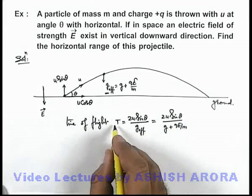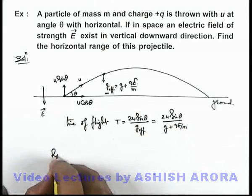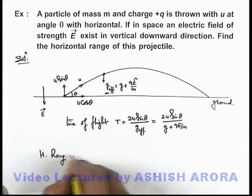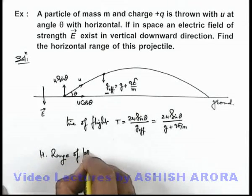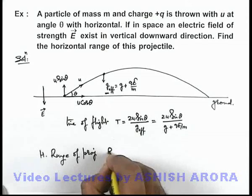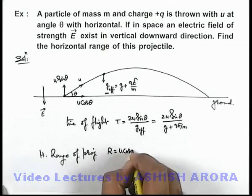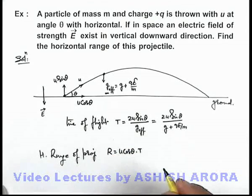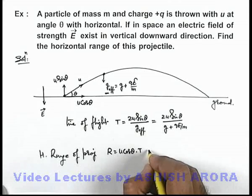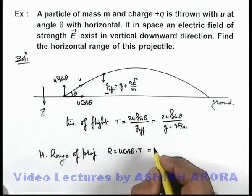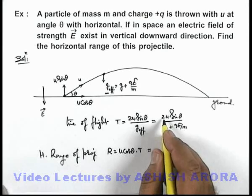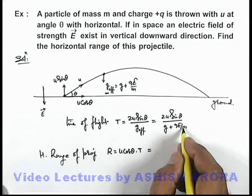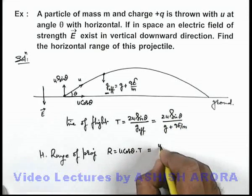And in this situation if we are having the time of flight, horizontal range of projectile can be directly given as R is equal to u cos θ multiplied by the time of flight. So in this situation this can be given as u cos θ multiplied by 2u sin θ by (g + qE/m).